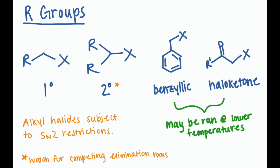The Kornblum oxidation begins with an SN2 reaction, which means that the alkyl groups are subject to the same SN2 restrictions that we've seen before. So we can use a primary alkyl group or a secondary alkyl group, but not tertiary. And if we use a secondary alkyl group, we'll want to make sure to watch out for competing elimination reactions.